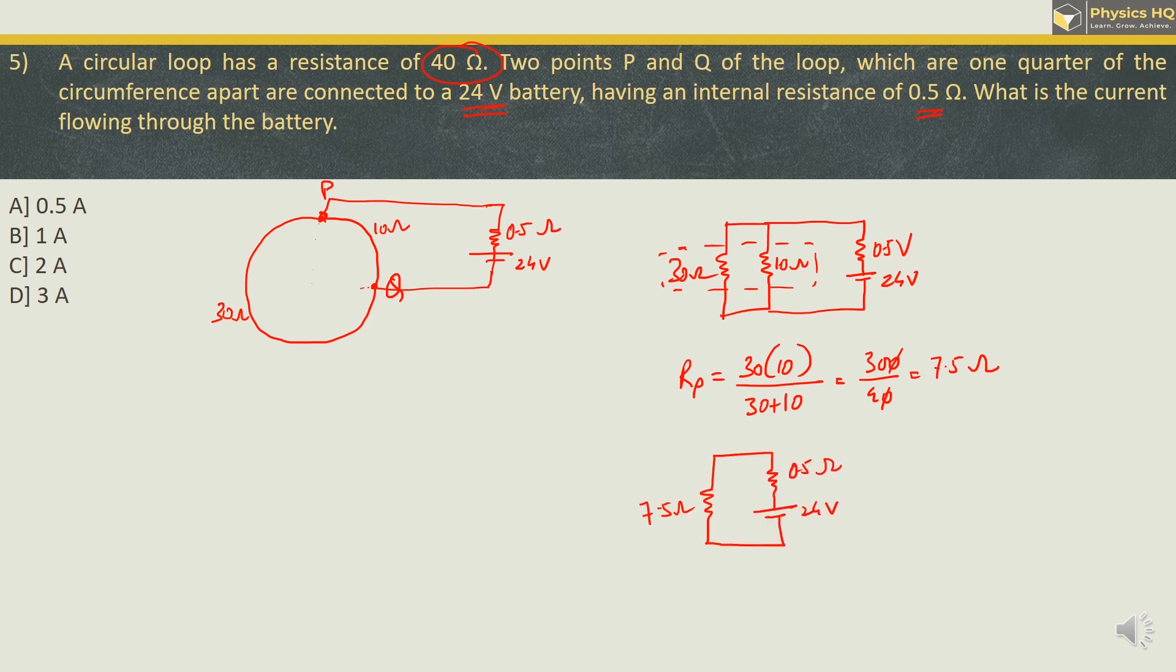So this is what we get and what we find is 7.5 Ohm and 0.5 Ohm are in series, and their equivalent will be 8 Ohm. By Ohm's law we can find the current I is equal to V by R. V is 24 volt and resistance is 8 Ohm, so we got the current as 3 Ampere. So the correct option is option D.